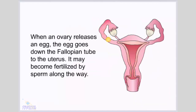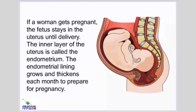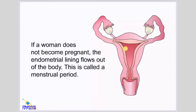When an ovary releases an egg, the egg goes down the fallopian tube to the uterus, where it may become fertilized by sperm along the way. If a woman gets pregnant, the fetus stays in the uterus until delivery. The inner layer of the uterus is called the endometrium. The endometrial lining grows and thickens each month to prepare for pregnancy. If a woman does not become pregnant, the endometrial lining flows out of the body.